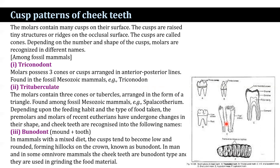The molars contain many cusps on their surface. The cusps are raised structures or ridges on the occlusal surface, and cusps are called cones. Depending on the number and shape of cusps, molars are recognized by different names. Among fossil mammals, there are two categories: triconodont and trituberculate. In triconodonts, the molar possesses three cones or cusps arranged in an anterior-posterior line, found in fossil Mesozoic mammals such as Triconodonta. In trituberculates, the molars contain three cones or tubercles arranged in the form of a triangle, also found among fossil Mesozoic mammals.